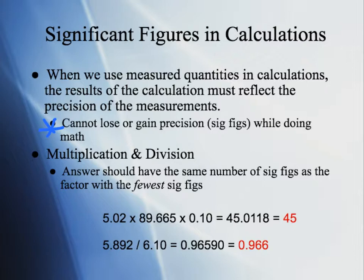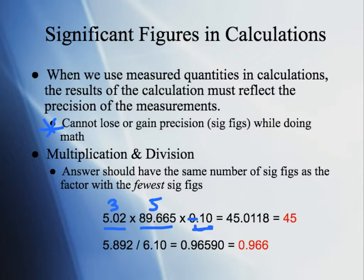Let's take a look at significant figures in calculations. Anytime you do a calculation, your answer needs to reflect the number of sig figs that tells us how precise the measurements are. When we use measured quantities in calculations, the results have to reflect the precision of the measurements — we cannot lose or gain precision, which means we cannot lose or gain significant figures while doing math. There are two different sets of rules: one for multiplication and division, one for adding and subtracting. For multiplication and division, your answer should have the same number of sig figs as the measurement with the fewest sig figs.